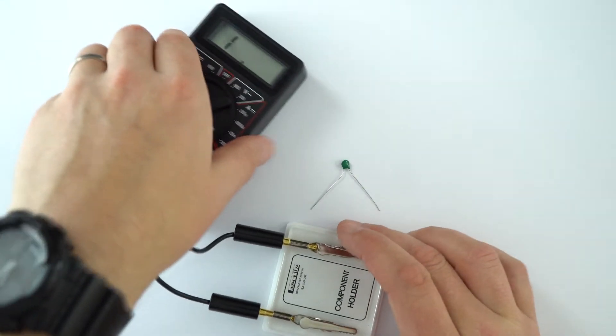Now this really small component here is a resistor, but its resistance can change depending on the temperature, and it's called a thermal resistor or a thermistor.